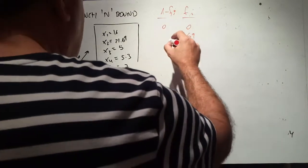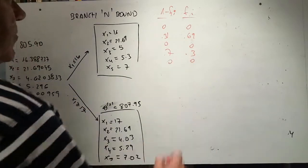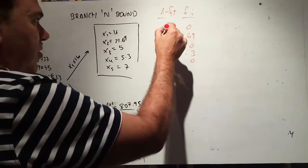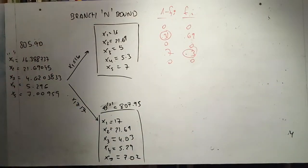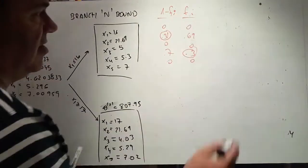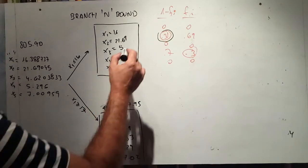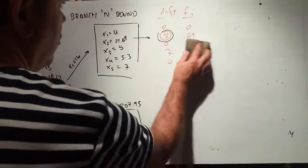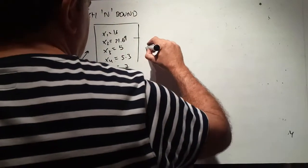The one-minus-fractional column gives: 0, 0.31, 1, 0.7, and 0. Going top to bottom and selecting the minimum of each pair: 0.31 for x2 and 0.3 for x4. The maximum of the circled values is 0.31, which belongs to variable x2. So this tells us the new variable over which we are going to do the ramification is x2, meaning we solve two more continuous relaxed problems.